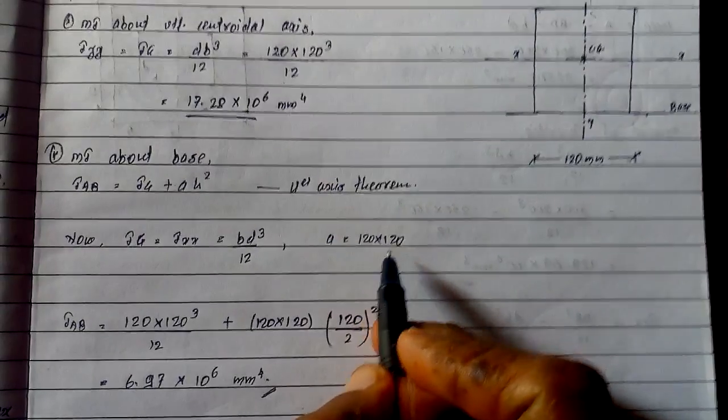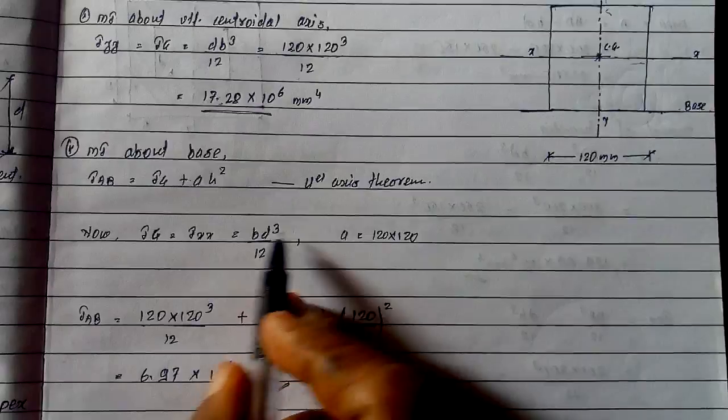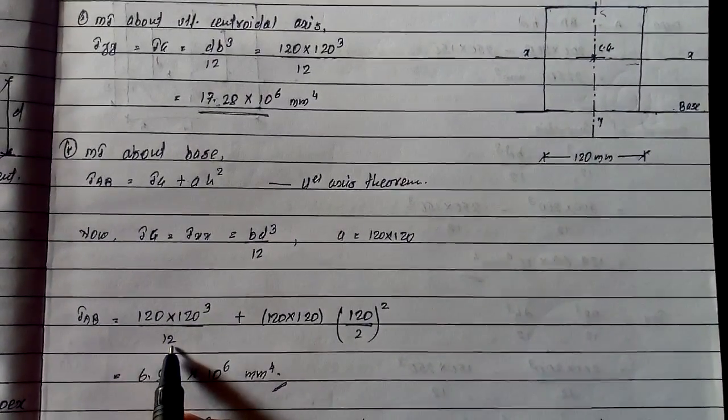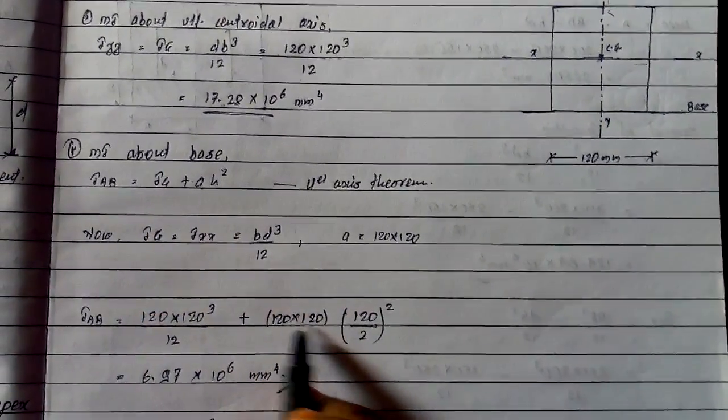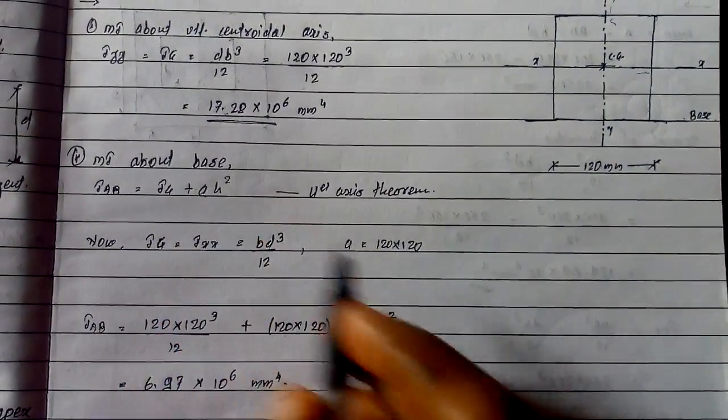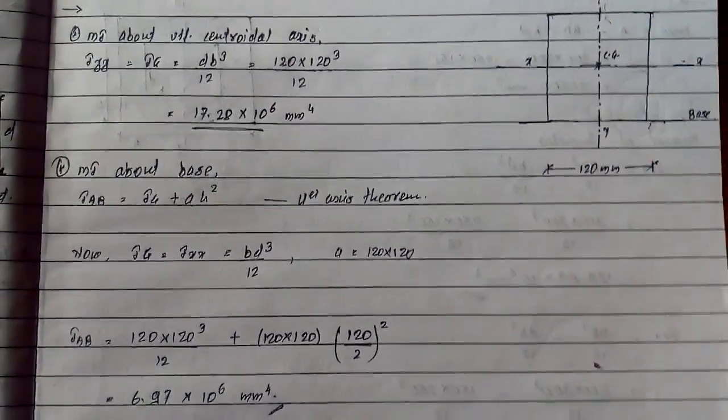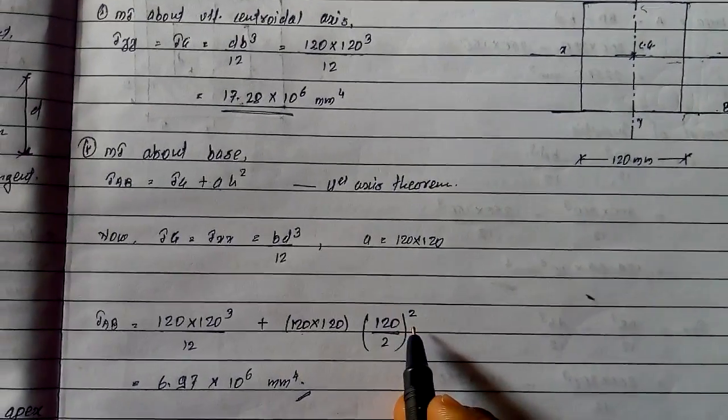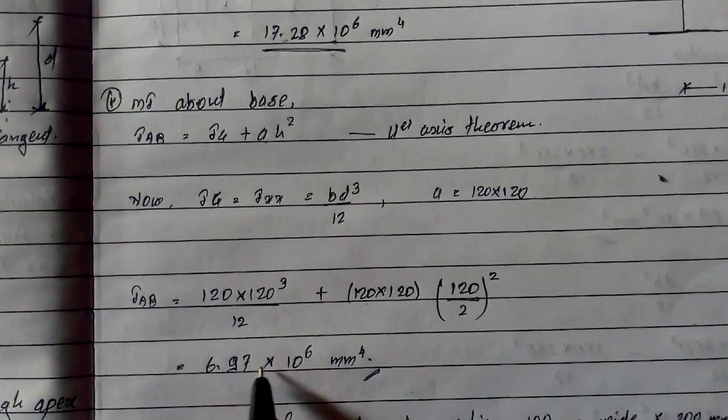So I_ab equals bd³/12, where b is 120, d³ is 120 cube, divided by 12, plus area which is b into d, that is 120 into 120, into h square. h is the axial distance from centroid, which is d/2, that is 120/2, that's 60, squared.